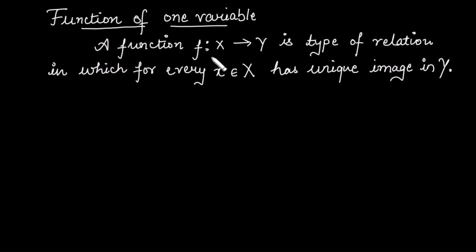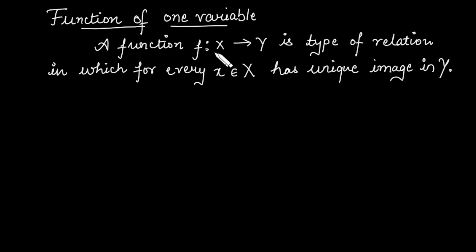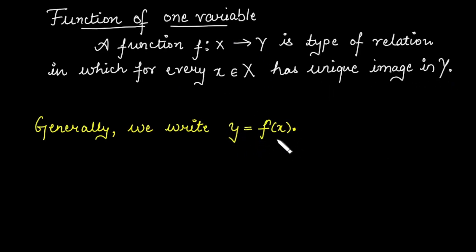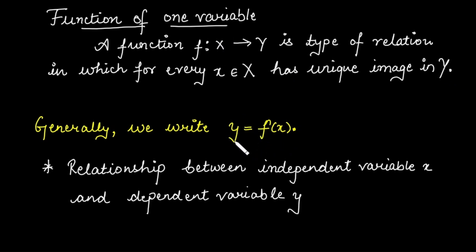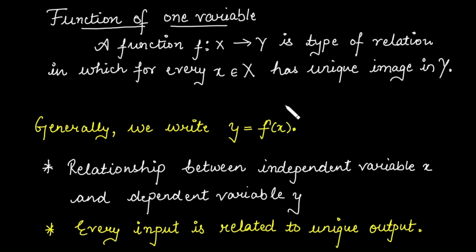A function of one variable is a relation between two sets x and y. Here x and y are both non-empty sets, and that relation is defined if we take any value from x that has a unique value in y. It means for every value of x belonging to the first set, there is a unique image in y. Generally, we write a function as y = f(x), which defines the relation between independent variable x and dependent variable y, or we can say that for every input, we are getting a unique value as output.